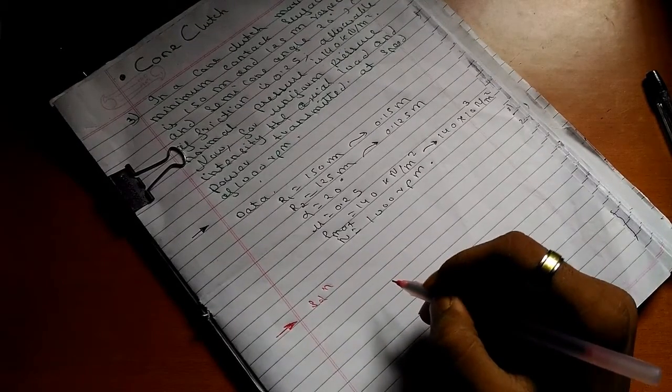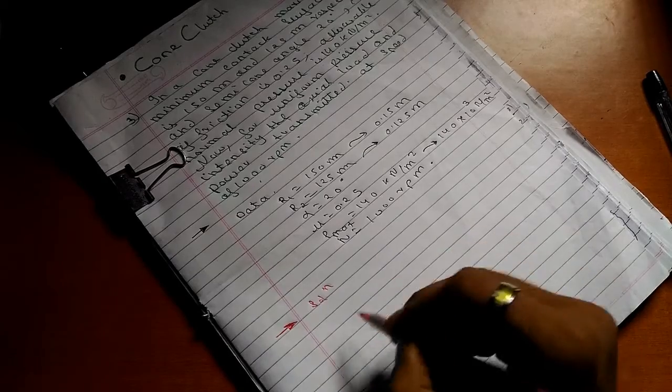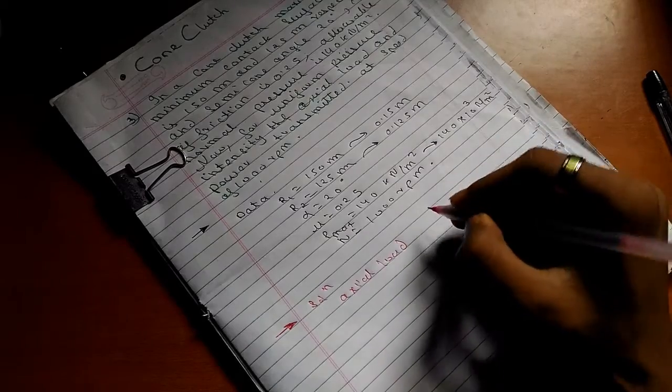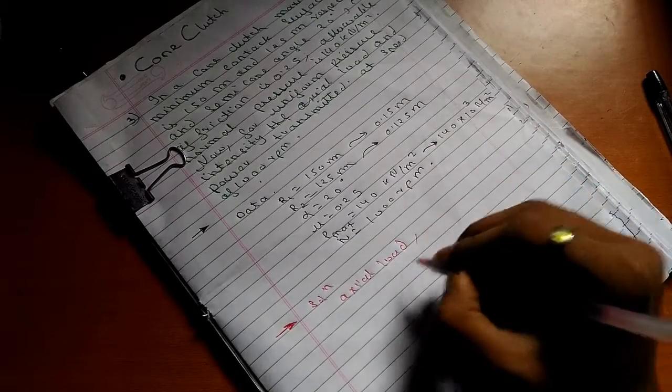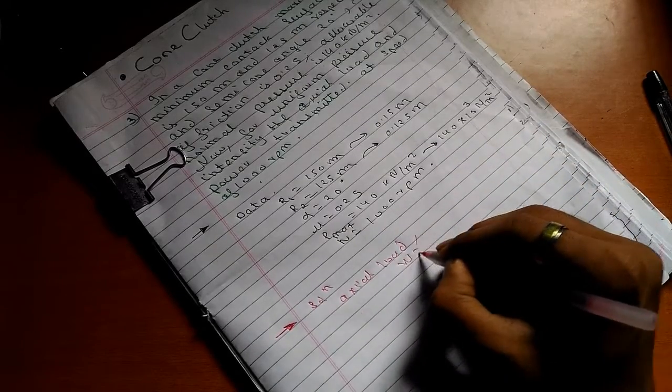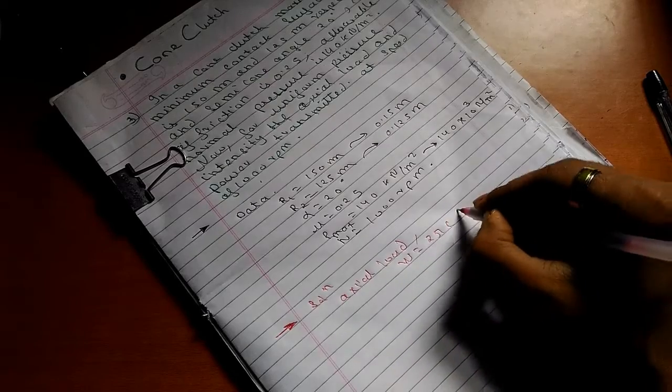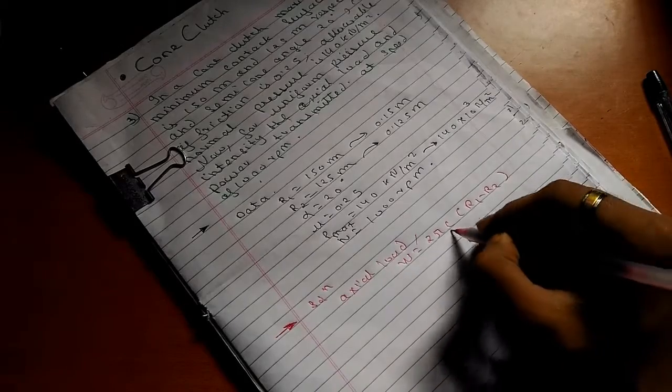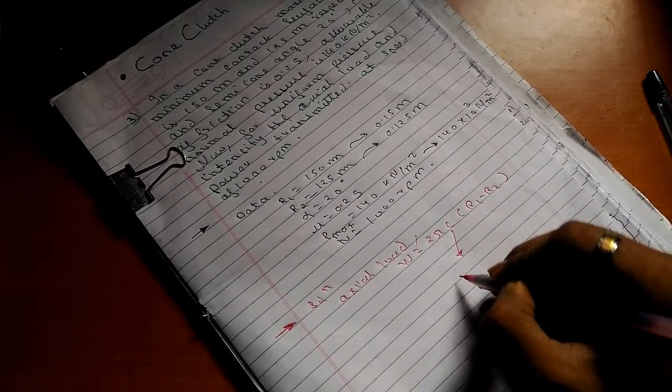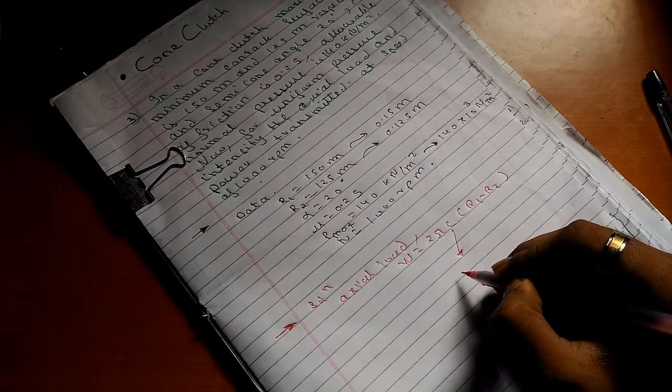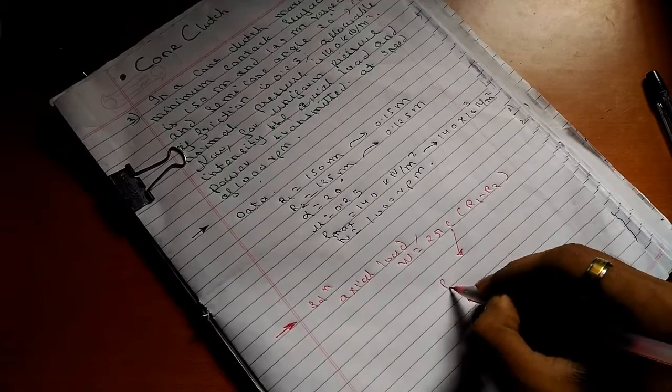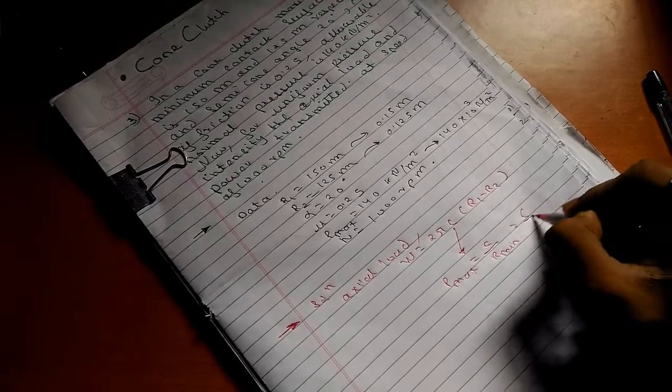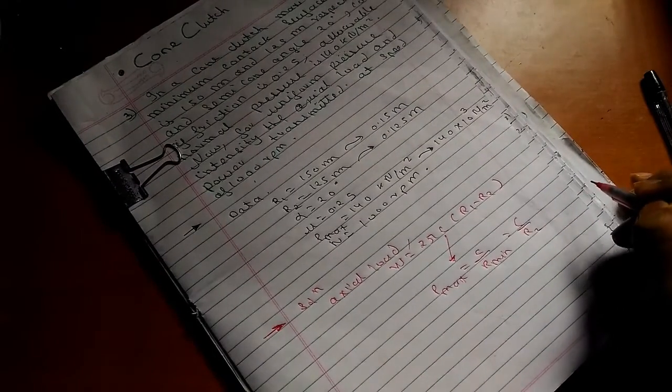Starting with the axial load, the formula is W equals 2π c times (r1 minus r2) for cone clutch, where c can be written as P max equals c by r minimum, or c by r2 which is minimum.